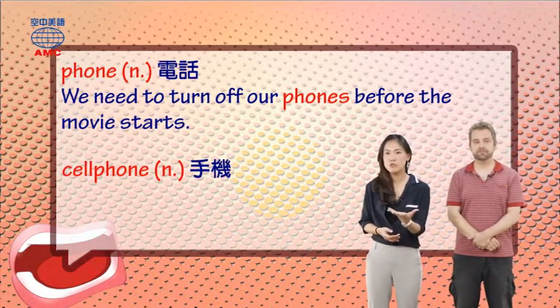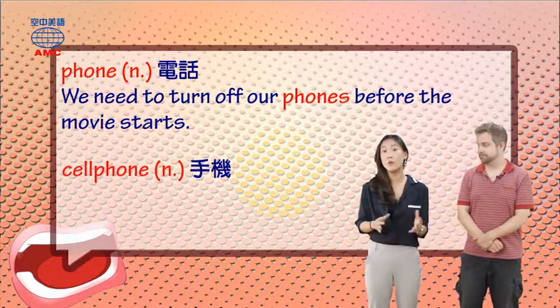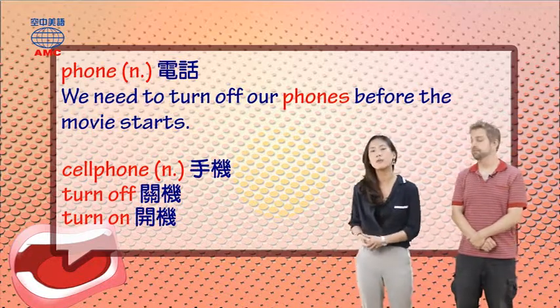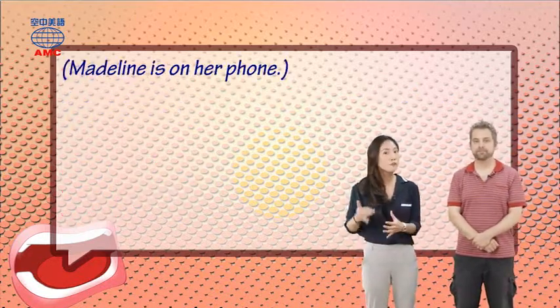例如说呢,在电影开始之前,我们必须将我们的手机关机。关机我们说 turn off the phone. 那开机当然就是 turn on the phone. So, Madeline's on her phone.